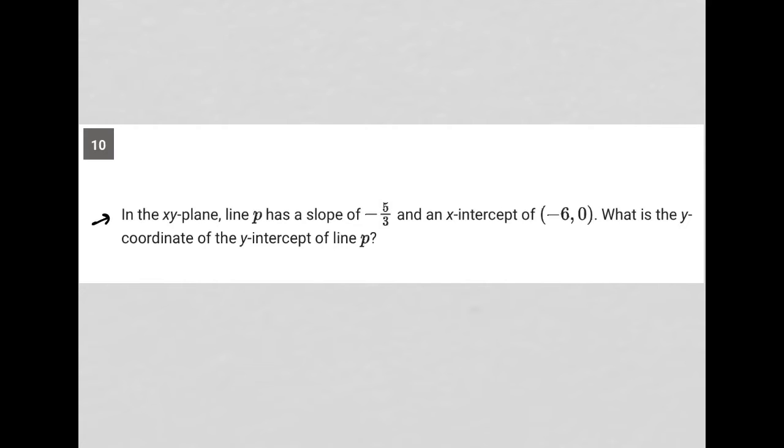So this question says, in the x-y plane, line P has a slope of negative five-thirds.